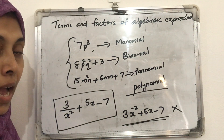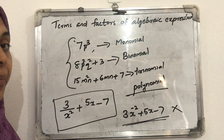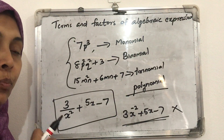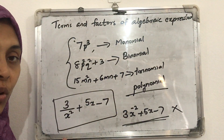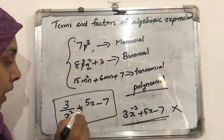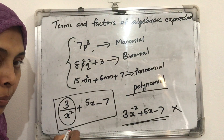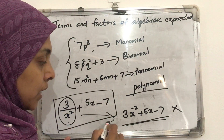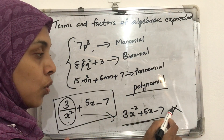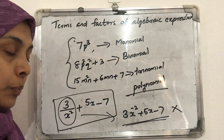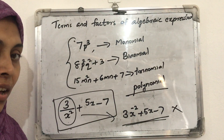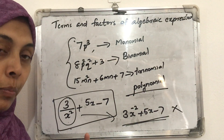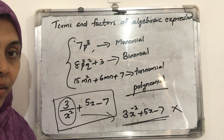So what is the condition to be a polynomial? An algebraic expression can be called a polynomial only if its variables have positive exponents — positive powers only. All the expressions 7p³, 8p²q² + 3, and 15m²n + 6mn + 7 have positive powers, so they are polynomials. But 3x^(−2) + 5x − 7 is not a polynomial because the power is negative and the variable is in the denominator. Remember: all algebraic expressions are not polynomials, but all polynomials are algebraic expressions. Thank you.